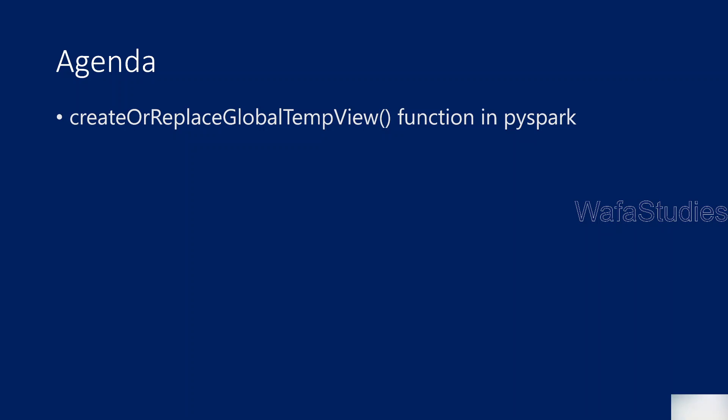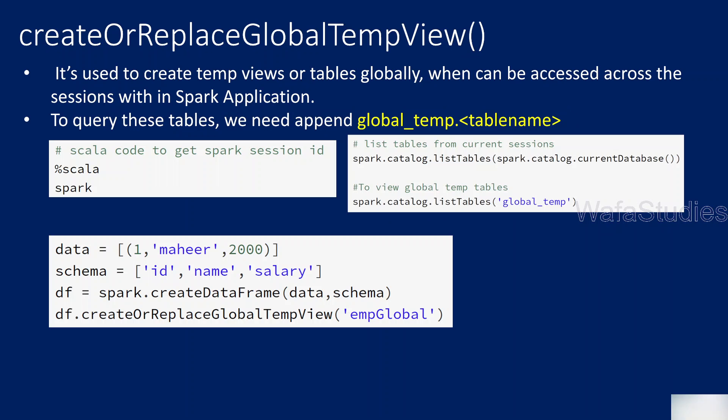We have already said that temp views are session-level, meaning within the session only you can access them. But global temp views can be accessed across sessions within the same Spark application. So whenever you create one notebook in Databricks and start writing Spark code, it is like one session.